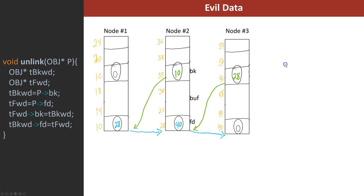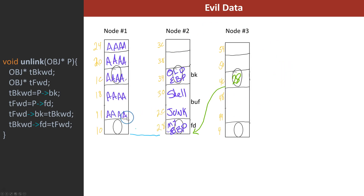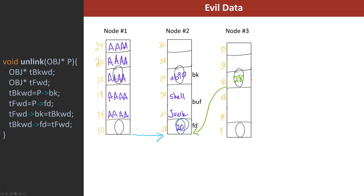Everything else starts out the same - initialized the same - but then during the gets call we write a bunch of A's, and after them we write our EBP and then junk and then shell and then old EBP. This is where we want it to eventually point to. We're going to use 2C - which points to junk - as where we want the new EBP to be, so that when the return is done the shell will be executed. And AB90 is where, on my machine during execution, the EBP is located.